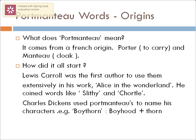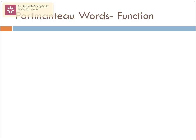Charles Dickens was another English writer who used many portmanteau words to name his characters. For example, in one of his books there is a character named 'Boythorn', a portmanteau of 'boyhood' and 'thorn'. James Joyce also began to use portmanteau words extensively in his works.